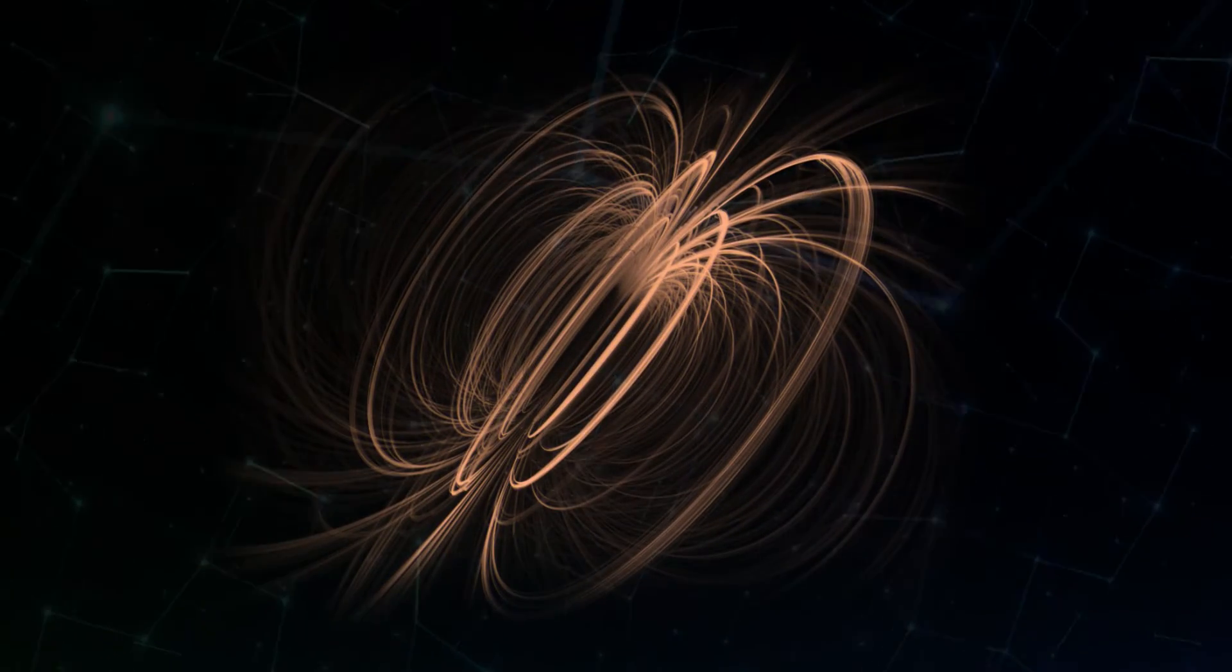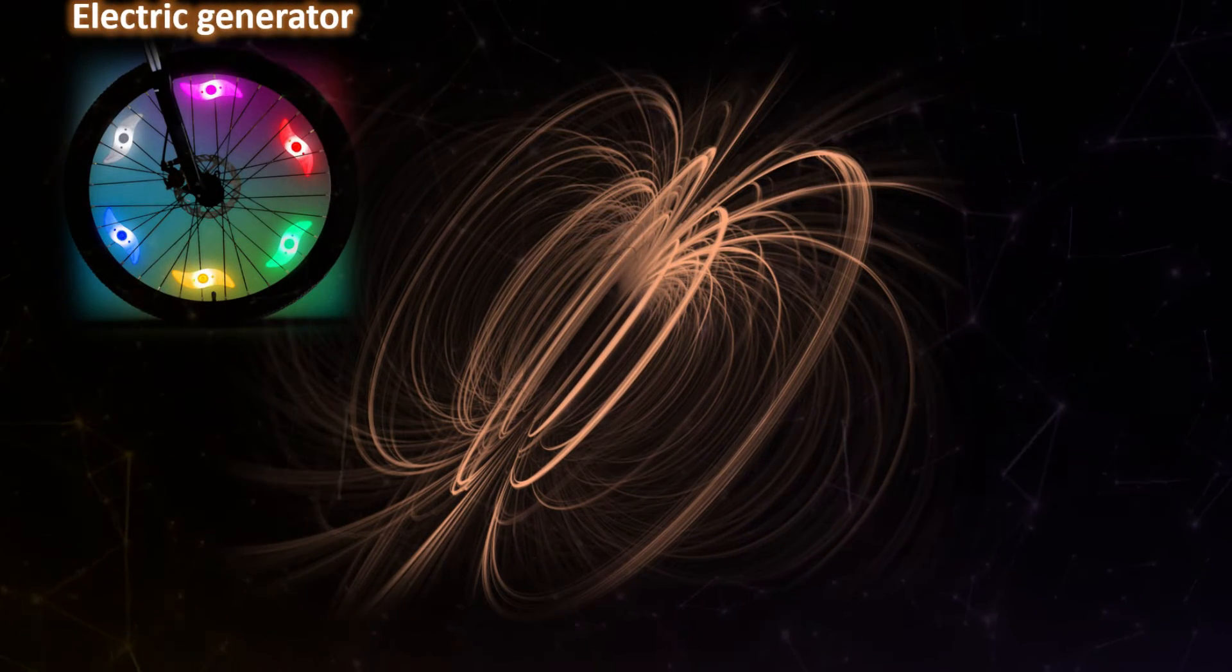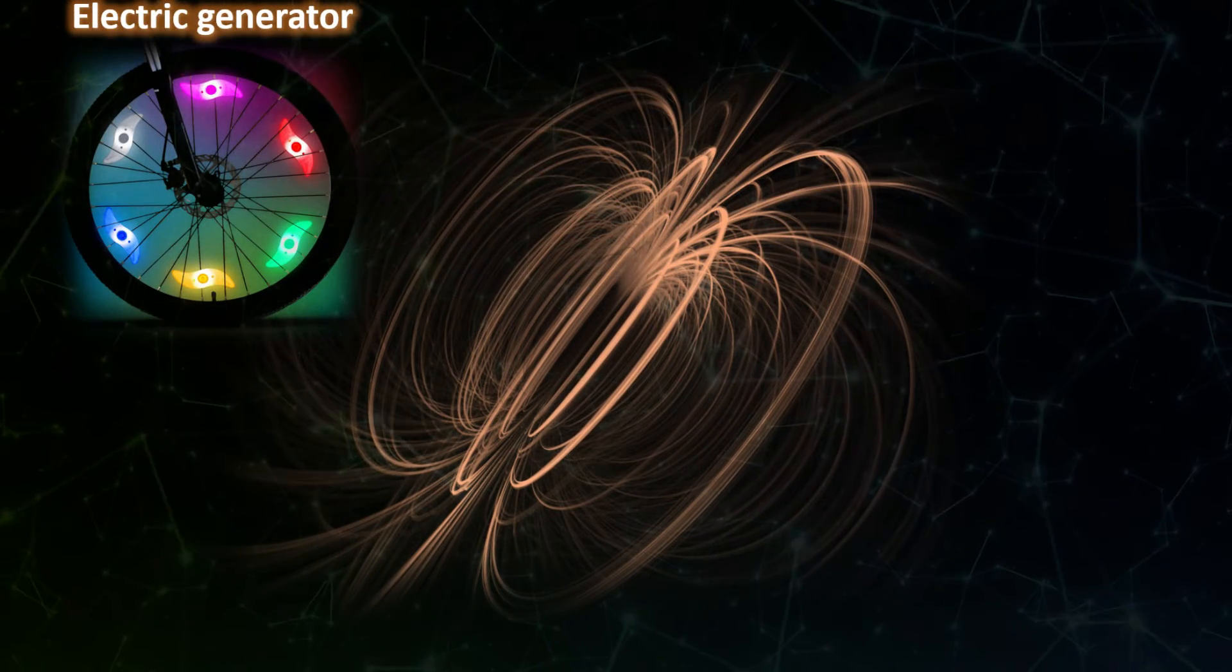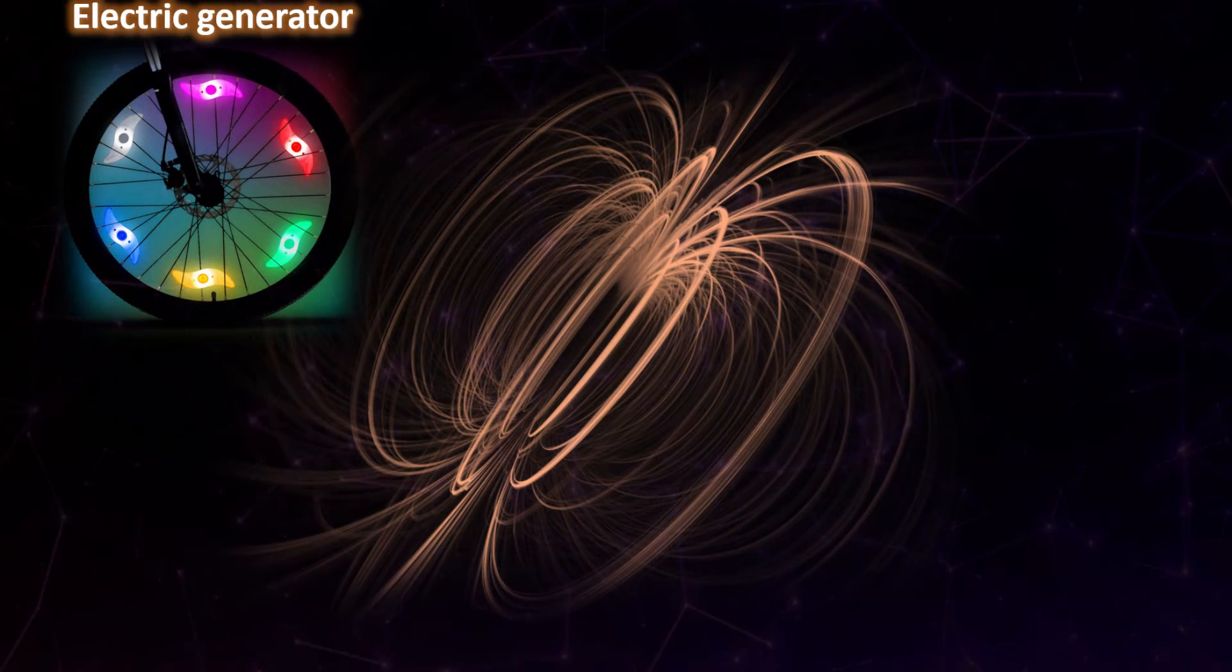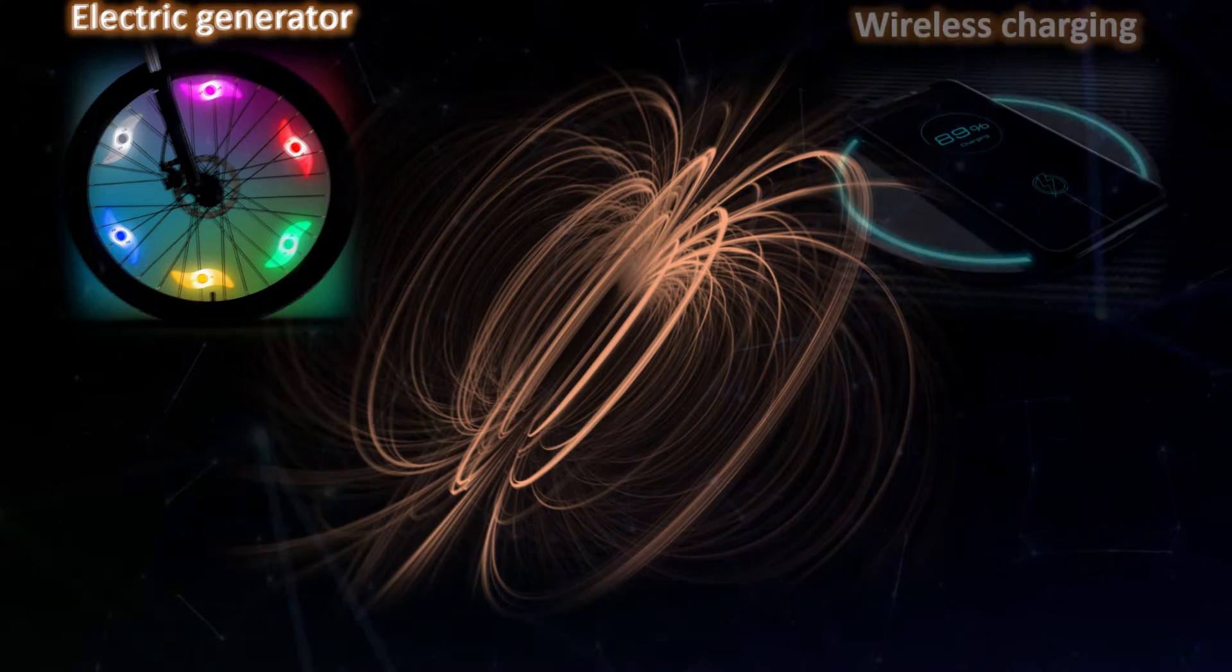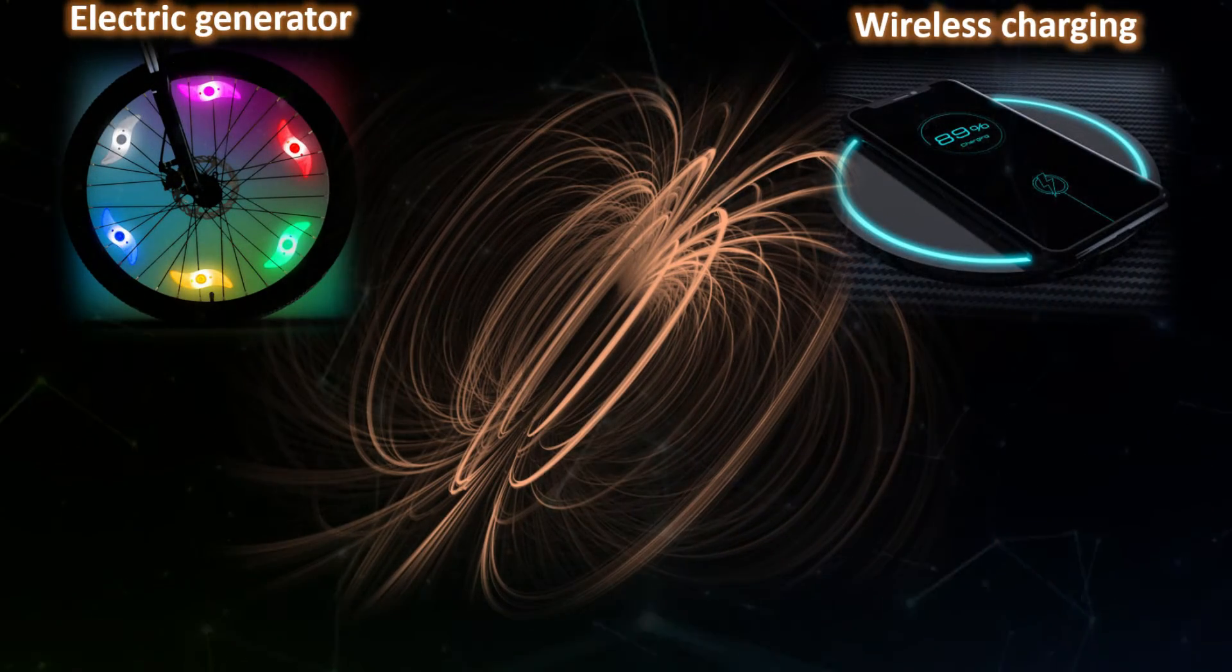Today electromagnetic induction is essential to our daily life. The ubiquitous electric generator which can be found in automobiles, bicycles and so on uses magnetism to generate electricity. Wireless charging of cell phone also uses the principles of electromagnetic induction.